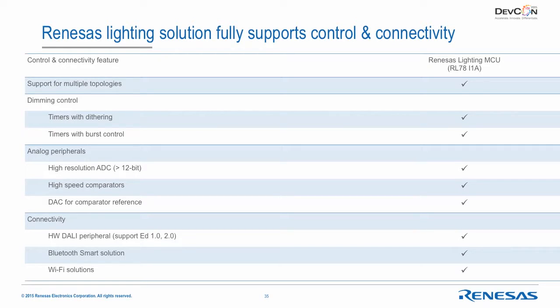Renesas has a lighting MCU called the RL78I1A that supports everything discussed — hardware and software for multiple topologies, dimming control, all analog peripherals, hardware DALI connectivity, as well as Bluetooth and Wi-Fi solutions.